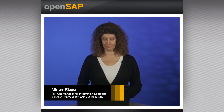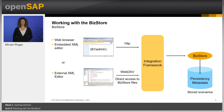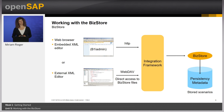Hello and welcome to week one, getting started for the course in action: Integration Framework for SAP Business One. My name is Miriam Rieger, and in this unit I will tell you about working with the BIS store. The objective of this unit is to define the purpose of the BIS store database and how to access it. The architecture of the integration framework includes a relational database as a persistent store for developed solutions. There is a logical interface layer called the BIS store — the XML persistency layer and logical storage. When a scenario is created, it is stored in the BIS store together with the respective XML documents.